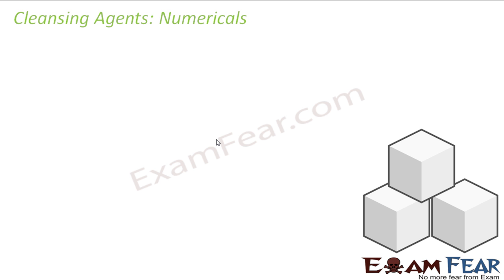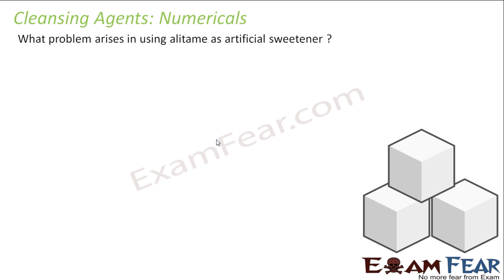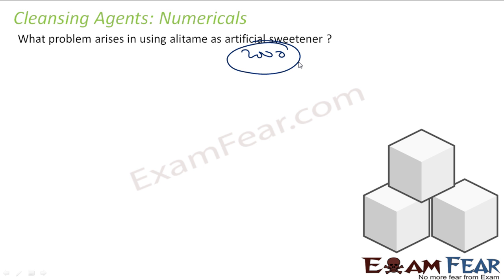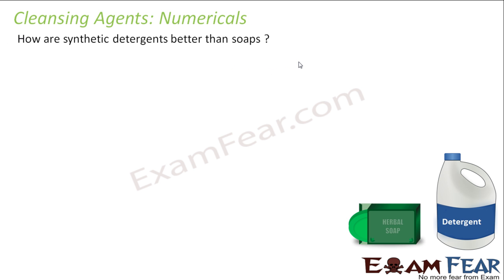What is the problem with alitame? Alitame is a very powerful sweetening agent — almost 2000 times sweeter than sucrose. The problem is that even one drop makes the whole food item very sweet, making it very difficult to control the sweetness. For example, when making one cup of tea, even one drop of alitame would make it extremely sweet.